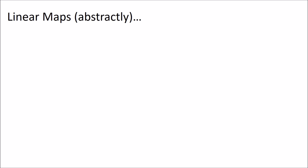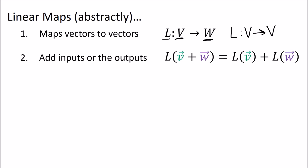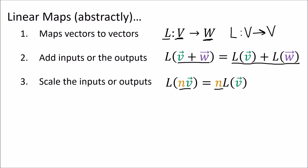Finally, the abstract definition: a linear map is a function which maps vectors to vectors — a linear map L mapping vectors from a vector space V to a vector space W. In general the input and output spaces can be different. Linear maps obey two properties: we can add the inputs or add the outputs and get the same answer, and we can scale the input or the output and also get the same answer. These are called linearity. Both co-vectors and linear maps are linear functions — the only difference is that co-vectors output a scalar while linear maps output vectors.